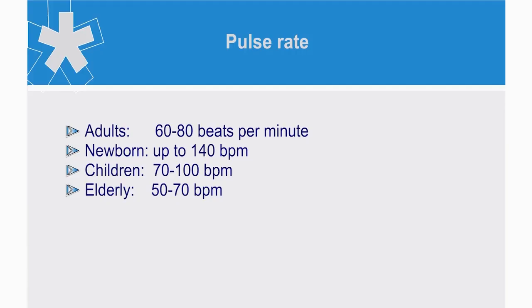Could you please remind us of the normal ranges of pulse rates? Yes, of course. The normal range in an adult is 60 to 80 beats per minute. In a newborn, up to 140 is normal. In children, 70 to 100, and in the elderly, 50 to 70 beats per minute.